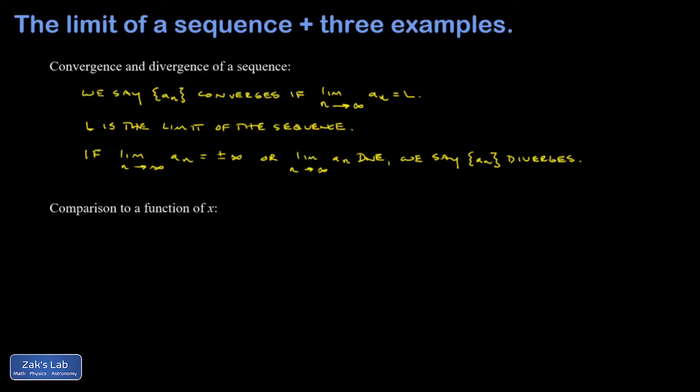The other is if the limit simply does not exist. For example, you could have a_n generated by a function that just keeps growing as n grows, going to infinity—that's a divergent sequence. Or you could have a_n generated by sine or cosine, where it's constantly oscillating between negative one and one, never settling down to a finite value. In either case, you would say the sequence diverges.